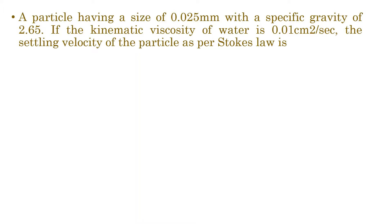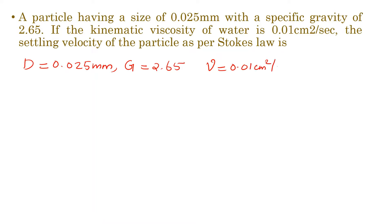We already discussed Stokes' law in class. The given values are: particle size 0.25 mm, specific gravity G = 2.65, and kinematic viscosity = 0.01 cm² per second. We will convert 0.01 cm²/s into meters: that is 1×10⁻⁴ m² per second.